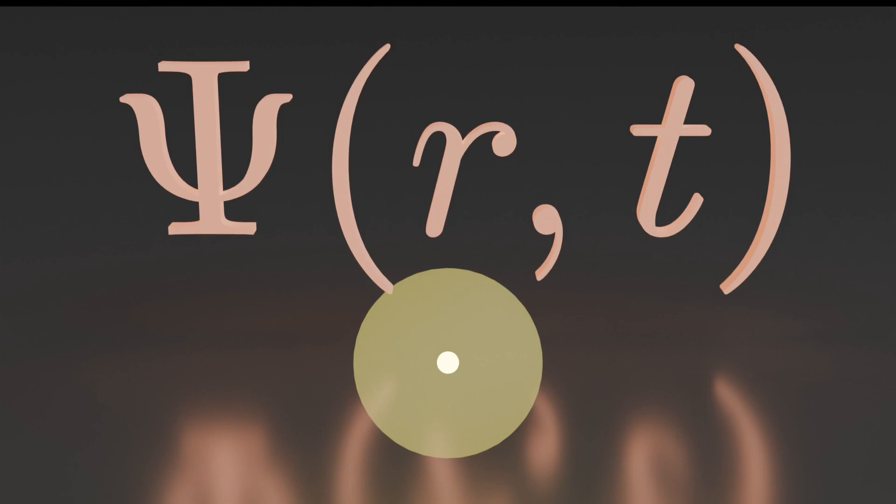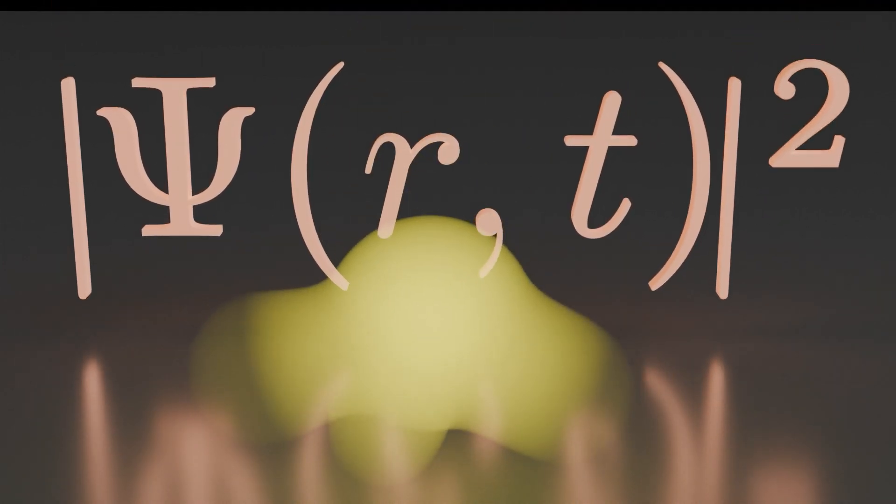This wave function is a function that takes in the position and just tells you stuff about it. What stuff? Well, for example, if you take this wave function and if you square the absolute value, then you get something that's proportional to the probability of the particle being in any given spot. So, right here it's really likely that the particle is there. Right here, not likely. And right here, borderline impossible.